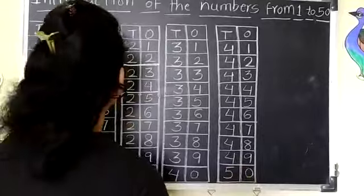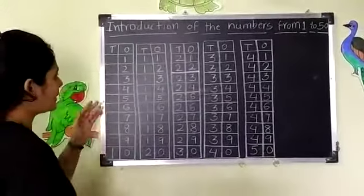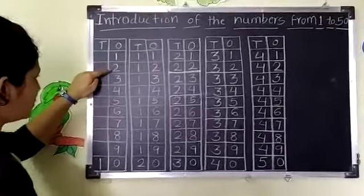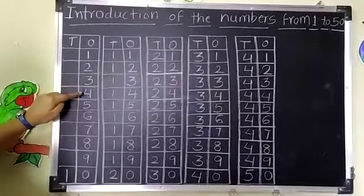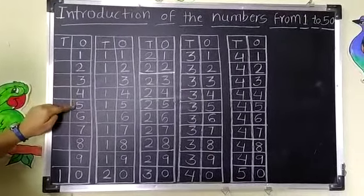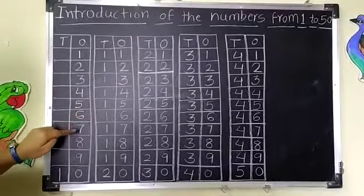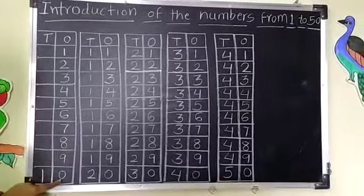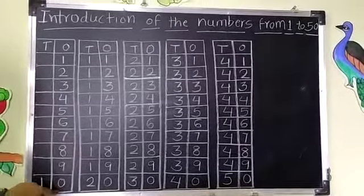Children, repeat it again. Say with me. 1, 2, 3, 4, 5, 6, 7, 8, 9, 1, 0, 10. Very good.